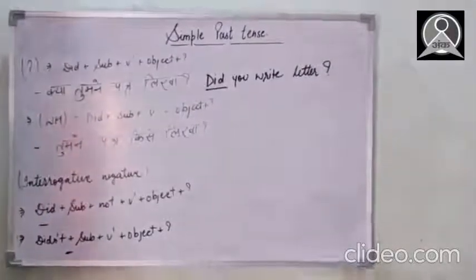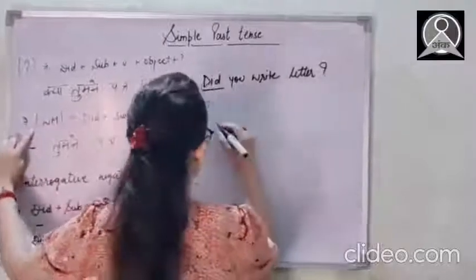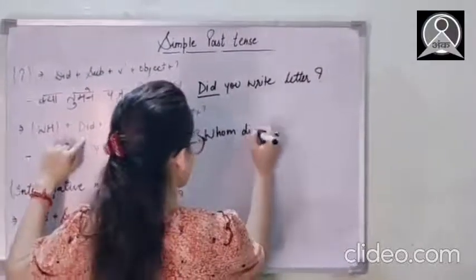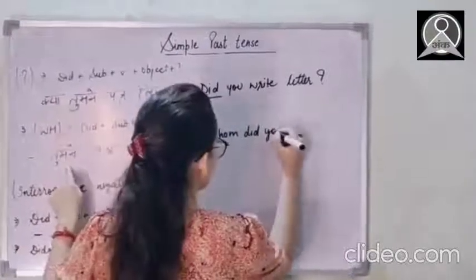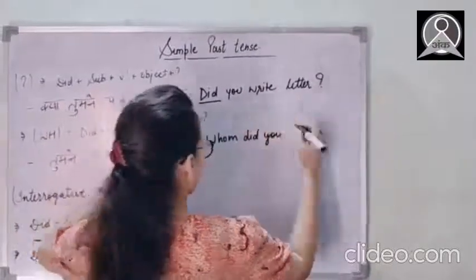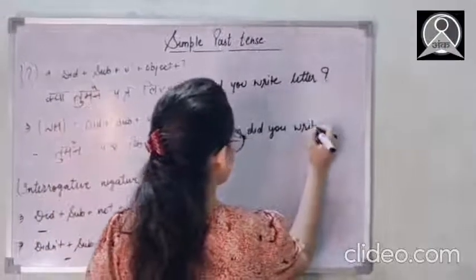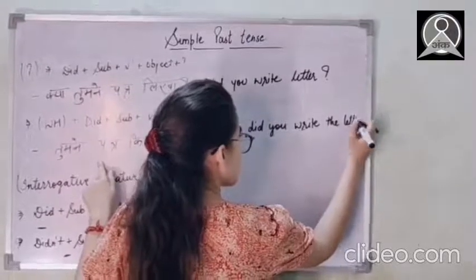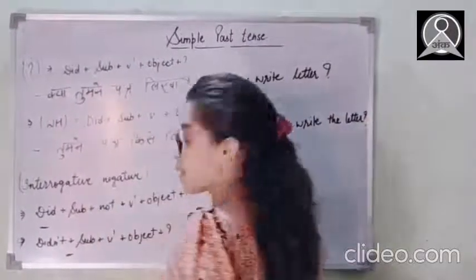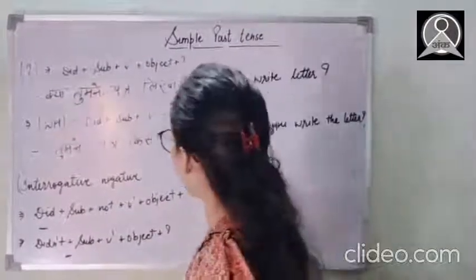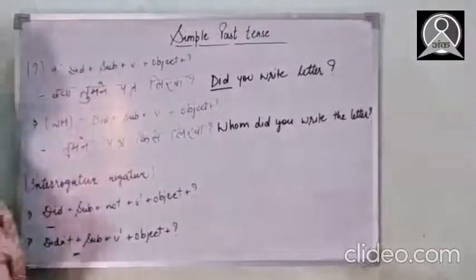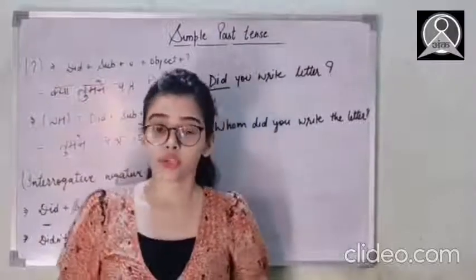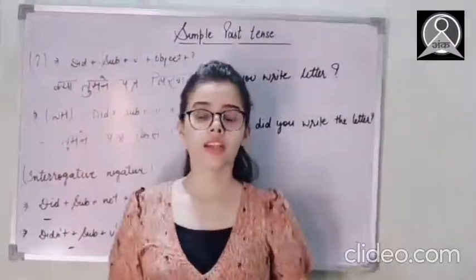Tumne patr kise likha? So kise, for kise we use who. Who did subject tumne you, verb's first form write, then the object patr the letter, question mark. And here I'm going to give an explanation that yes I wrote the letter to my mother. So this is not yes I wrote a letter or no I didn't.